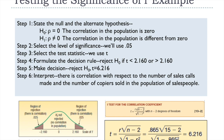Plugging in r = 0.865 and n = 15 into Formula 13-2, we get a t-value of 6.216, which falls in the positive rejection region. Therefore, we reject the null hypothesis. We conclude that there is correlation with respect to the number of sales calls made and the number of copiers sold in the population of salespeople.